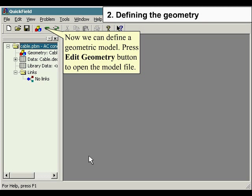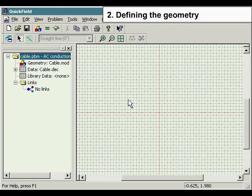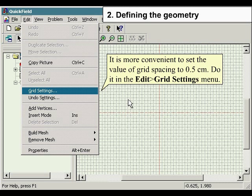Defining the geometry. Now we can define a geometric model. Press Edit Geometry button to open the model file. It is more convenient to set the value of grid spacing to 0.5 cm.